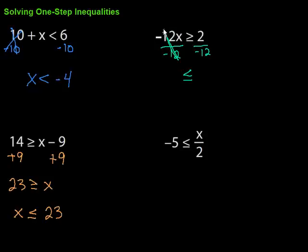Bring down what's left here. This is gone. We've got the x left. Then on this side, there's a fraction sitting there. 2 divided by negative 12, that's going to be negative 1 sixth.